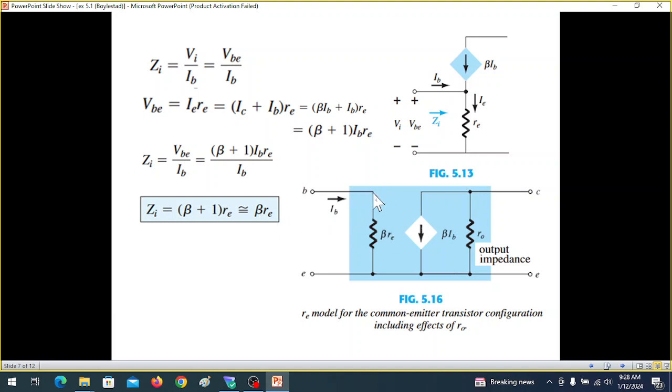So we can replace this or we can divide this into two parts. We call this beta RE the input impedance, and the output side we have the current beta IB or IC. Now at the output there is a very high impedance in the transistor, so we will incorporate that. That is called output impedance RO. So this will be our common emitter transistor configuration in RE model.